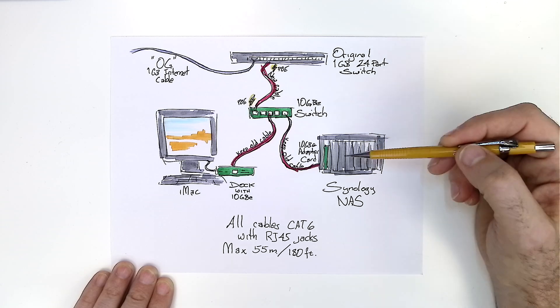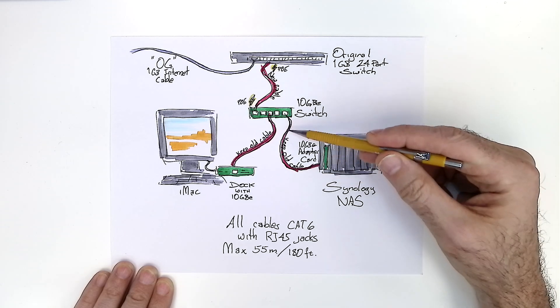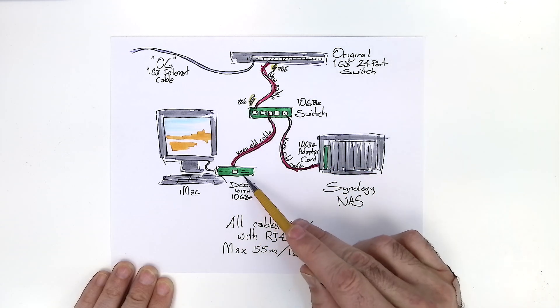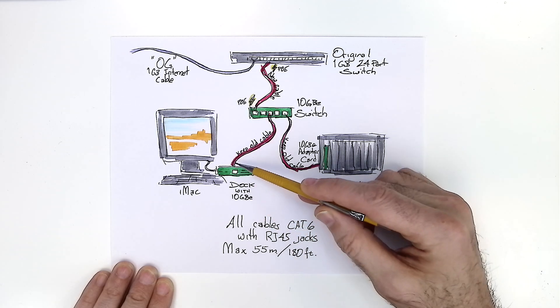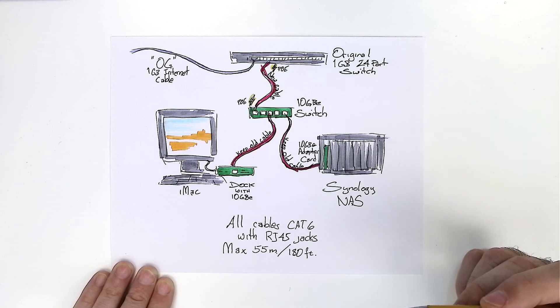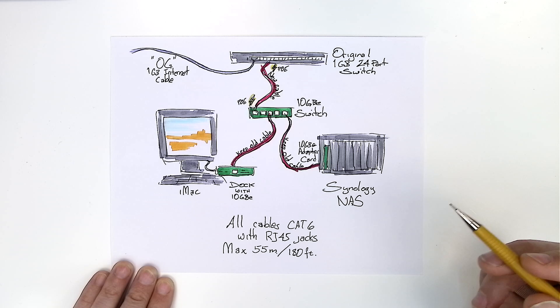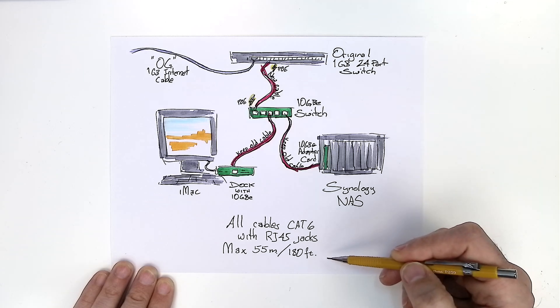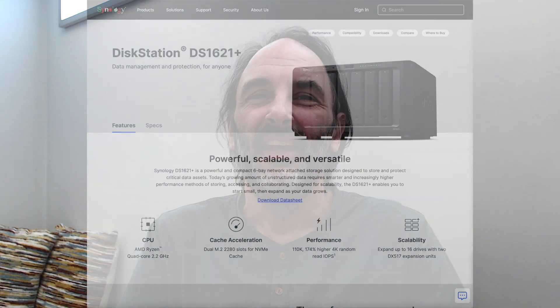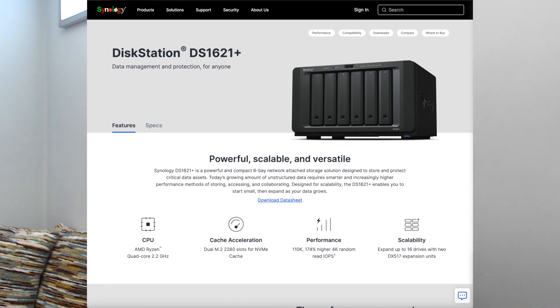The regular 1 gigabit Ethernet cable comes in providing the internet. On the Synology NAS, I kept the old cable that's running through the wall, and likewise on my iMac I added a dock with 10 gigabit Ethernet. I can use RJ45 jacks with CAT6 cable for the whole thing — the max you can use is 180 feet or 55 meters, which is long enough for any home network. My original NAS is a Synology DS1621 Plus, so I had to purchase a 10 gigabit Ethernet card made by Synology.